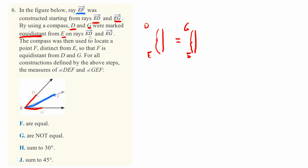We see a similar thing about some other points. The compass was then used to locate a point F, distinct from E, so that F is equidistant from D and G. So the distance between F and G is the same as the distance between D and F.